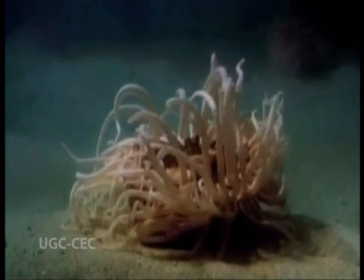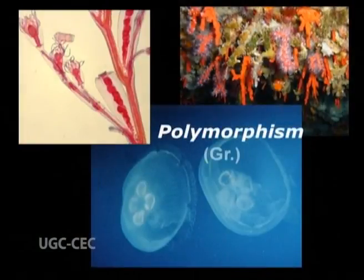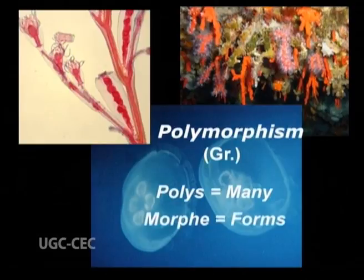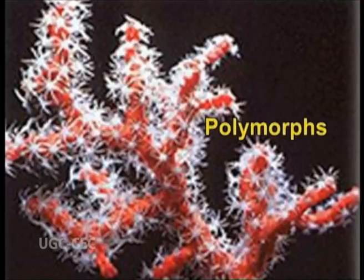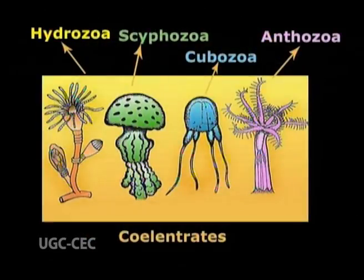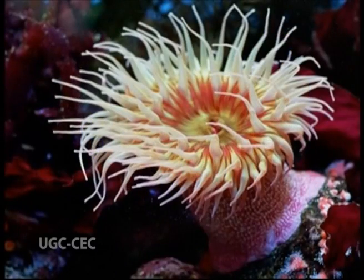They are acoelomates as the body cavity coelom is absent. Polymorphism in the form of polyps and medusa is observed in these animals. This phylum is also termed as Cnidaria and the members are radially or biradially symmetrical and are termed as cnidarians. The term polymorphism is derived from the Greek terms 'polis' meaning many and 'morphe' meaning forms. Hence organisms that exhibit more than one form in their life are termed as polymorphs, and the phenomenon is termed as polymorphism. This is prominently observed in Coelenterates which exhibit the tissue grade of organization only.